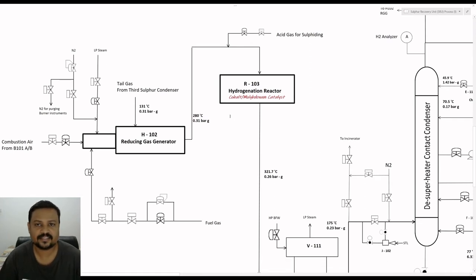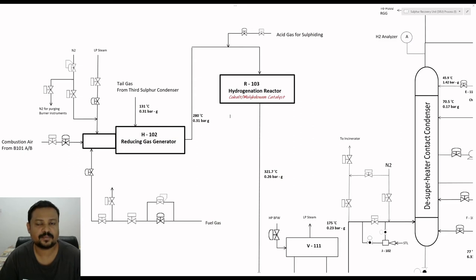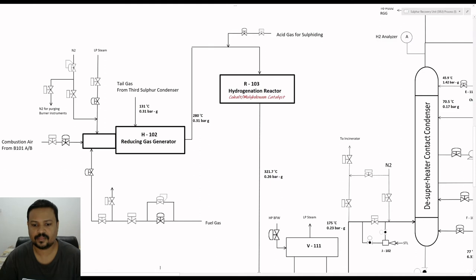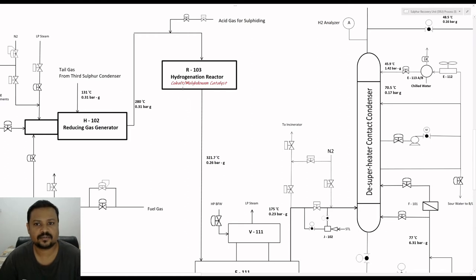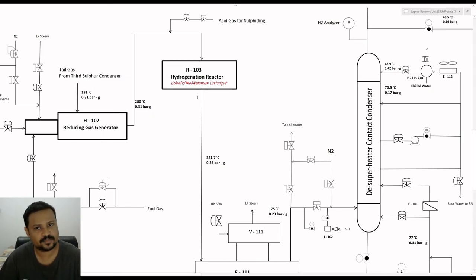The idea behind the RGG is that by generating reducing gases like hydrogen and carbon monoxide, we can reduce the sulfur species and other compounds of sulfur — namely sulfur dioxide, carbon sulfide, and carbon disulfide — back to H2S. The H2S produced from the reactor will then be absorbed by a selective amine which has high affinity to absorb H2S from the tail gas. After mixing tail gas to the RGG, the reducing gases are routed to the inlet of the hydrogenation reactor. The hydrogenation reactor is a fixed bed of cobalt molybdenum catalyst, and the purpose of the catalyst is to carry out water-gas shift reaction with carbon monoxide to produce more hydrogen for hydrogenation reactions.